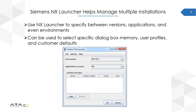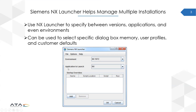Siemens has introduced a new tool to help us with that, called Siemens NX Launcher. This is going to allow us to specify between versions, applications, and even environments. So I can choose — in this case I've specified that I want to be able to choose between 1872, 1847, and NX 12. For each of those I can choose my application to launch, so I can choose between NX, Simcenter 3D, or NX Viewer. In addition to this, I could use the Siemens NX Launcher to select specific dialogue box memories, user profiles, and even customer defaults — so I could have multiple 1872 environments set up depending on the different customers I might be working for.